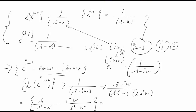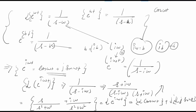This result equals the Laplace transform of e raised to i·omega·t, which equals the Laplace transform of cos(omega·t) plus j times the Laplace transform of sin(omega·t). Therefore, the Laplace transform of cos(omega·t) equals s upon (s squared plus omega squared), and the Laplace transform of sin(omega·t) equals omega upon (s squared plus omega squared).